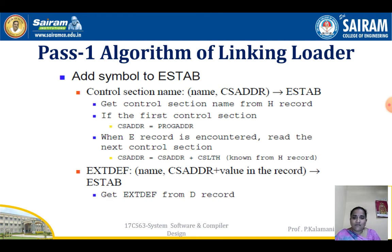When an end (E) record is encountered, we read the next control section. The next control section address is calculated as: CS address = starting address of the current control section plus the length of the control section. For external definitions, the symbol name and control section address plus value in the record are together added into the external symbol table.